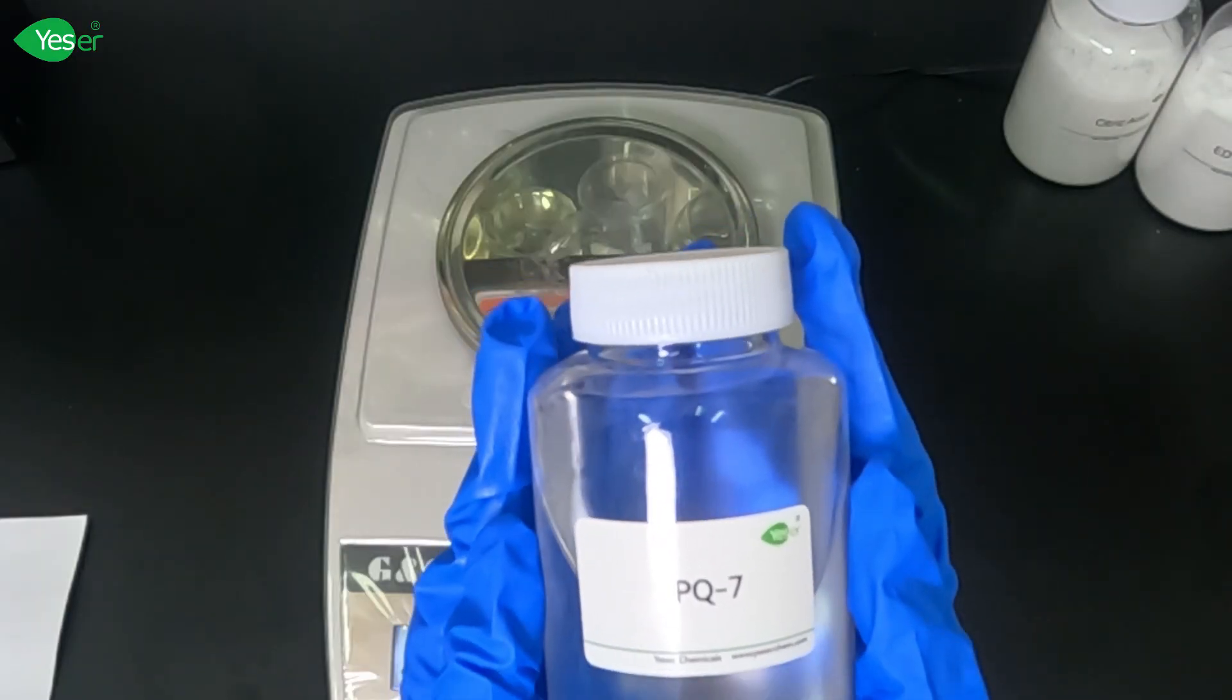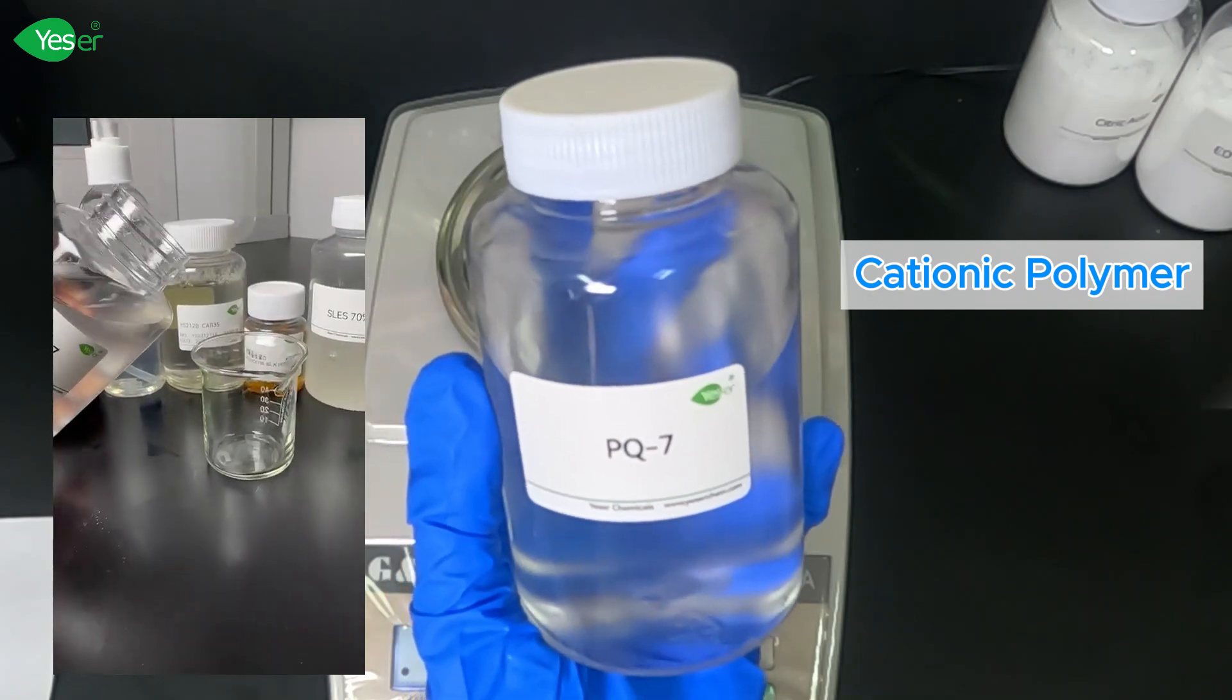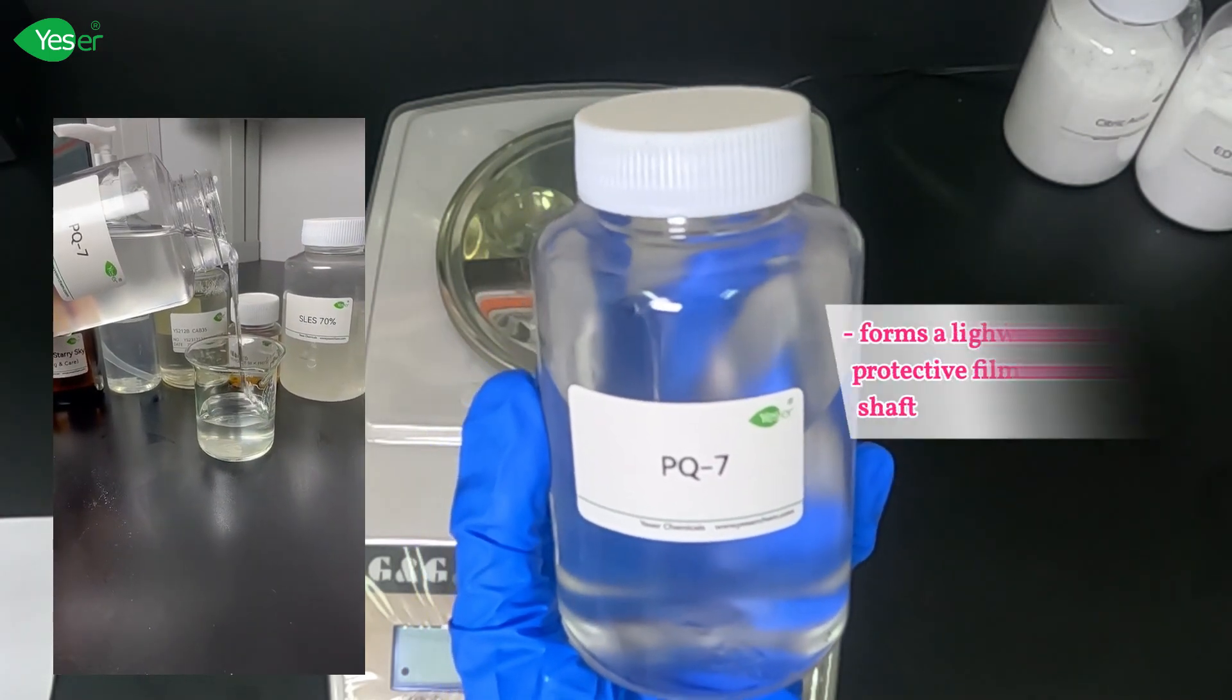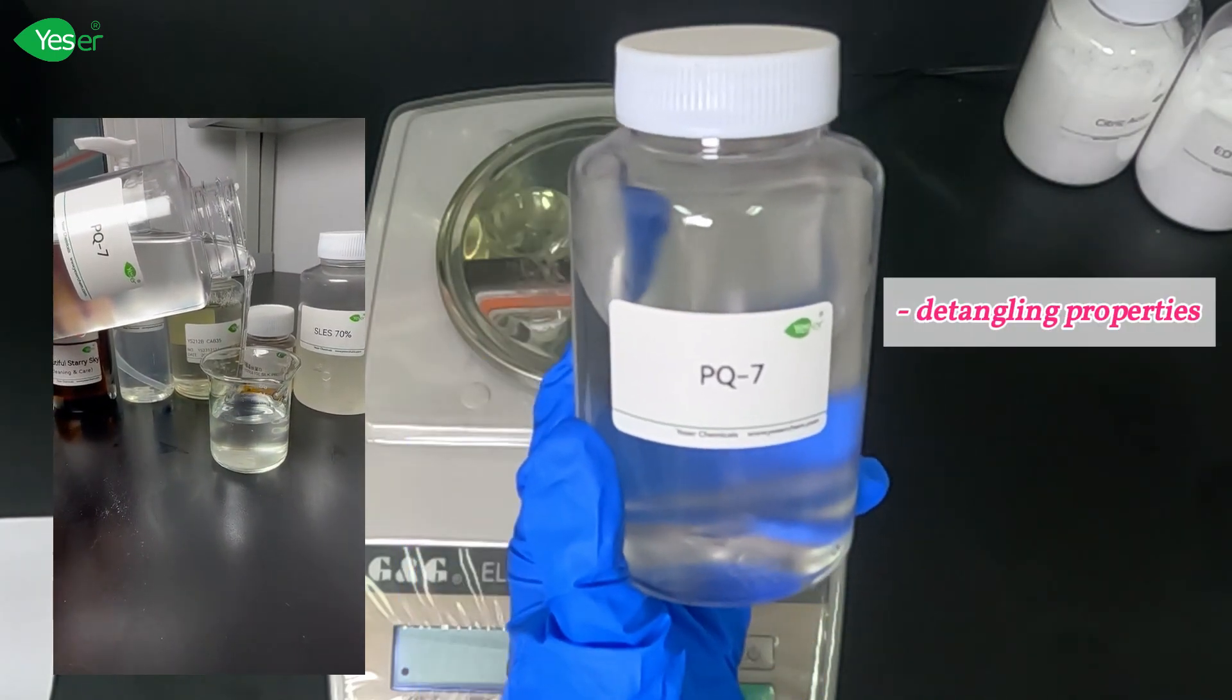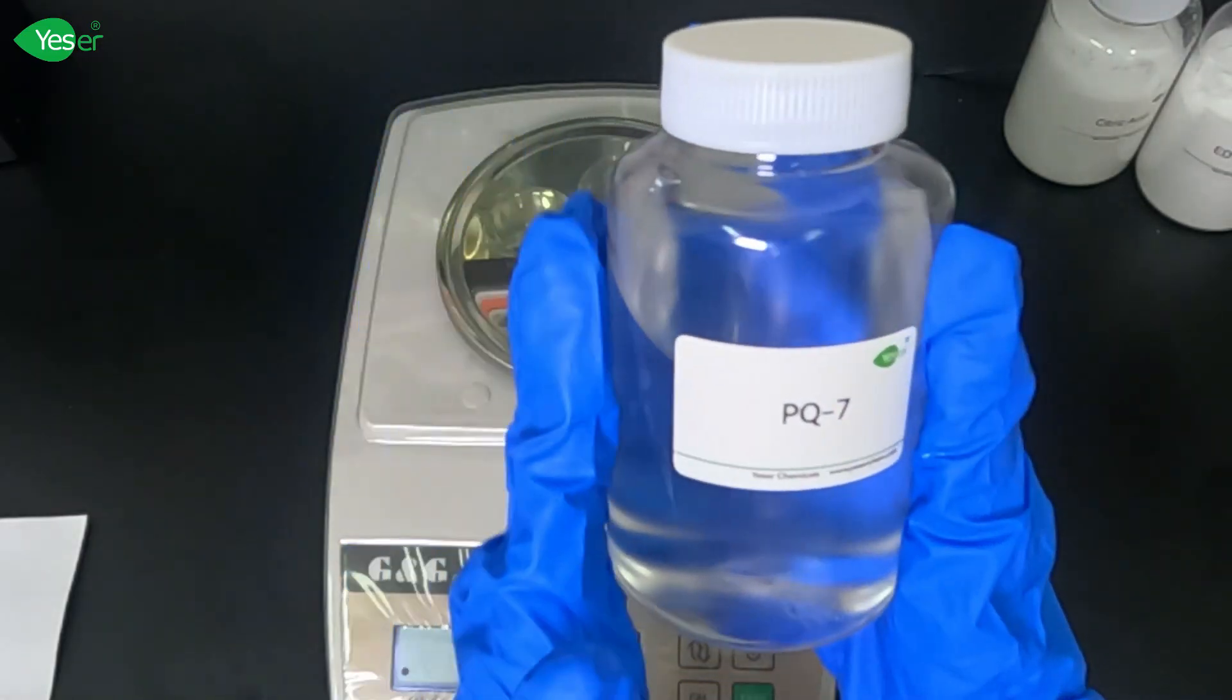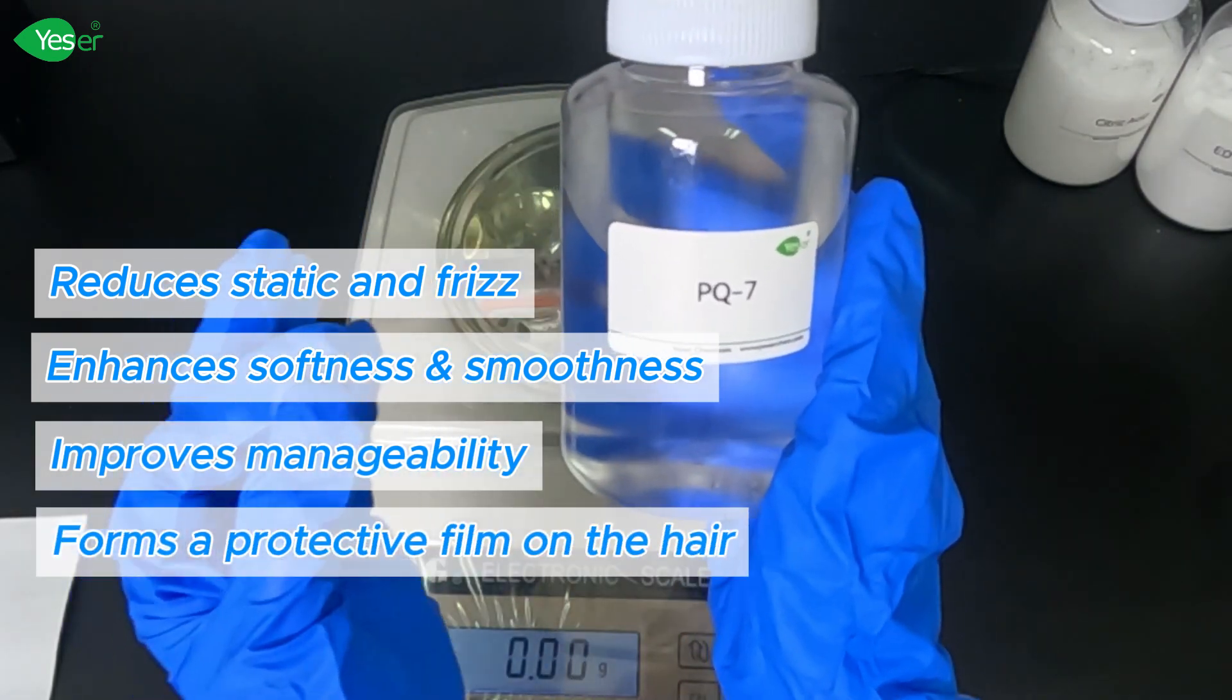We'll now add our Polyquaternium-7, or PQ-7. Let's talk about this one. This conditioning powerhouse is a cationic polymer that excels at reducing static and frizz, making hair easier to manage and style. PQ-7 works by forming a lightweight protective film on the hair shaft, which not only improves hair texture but also imparts a silky soft feel. Its superior detangling properties make it an essential ingredient for any high-performance shampoo, ensuring your hair is left smooth and tangle-free.